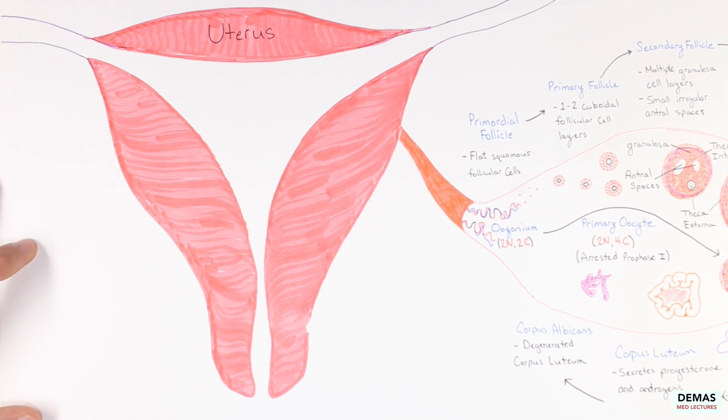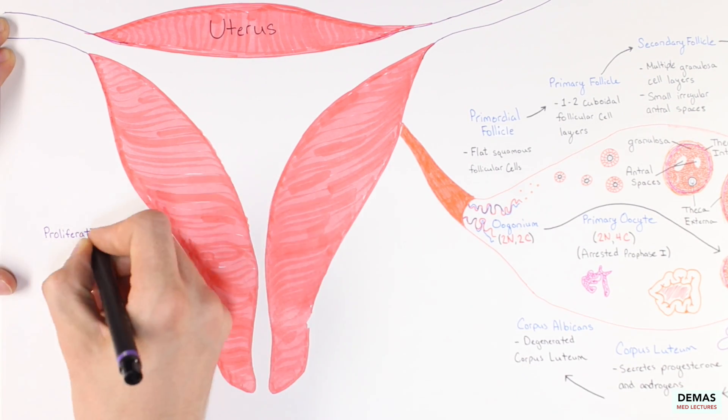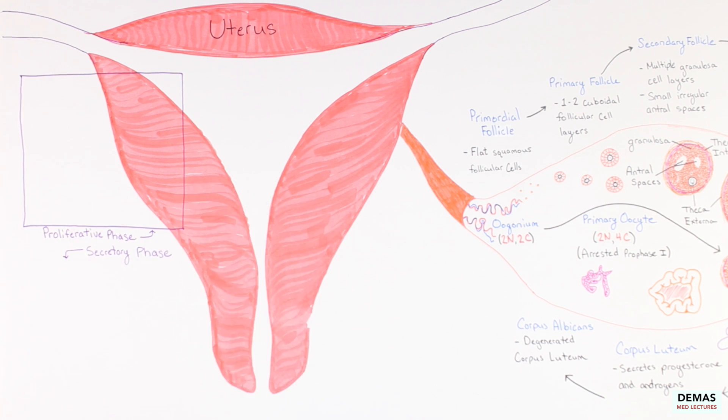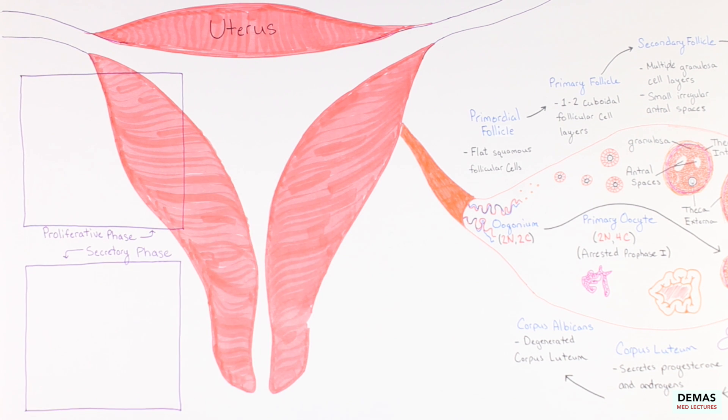The proliferative phase, secretory phase, and menstrual phase. You should be able to recognize the histology of the proliferative and secretory phase. However, you should not worry about the histology of the menstrual phase for this course.